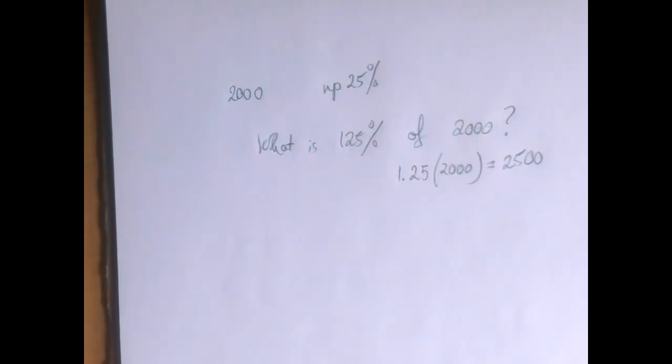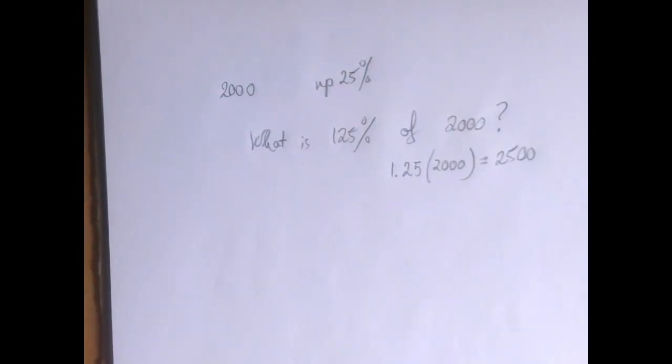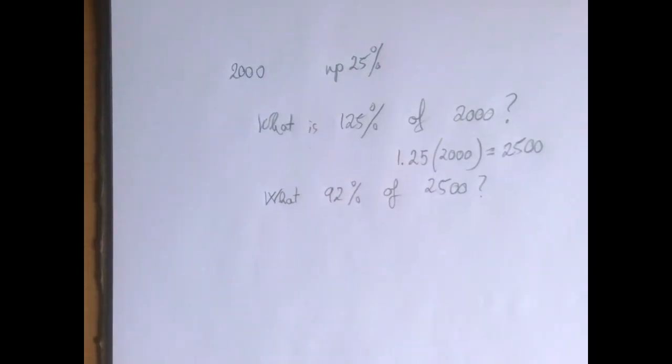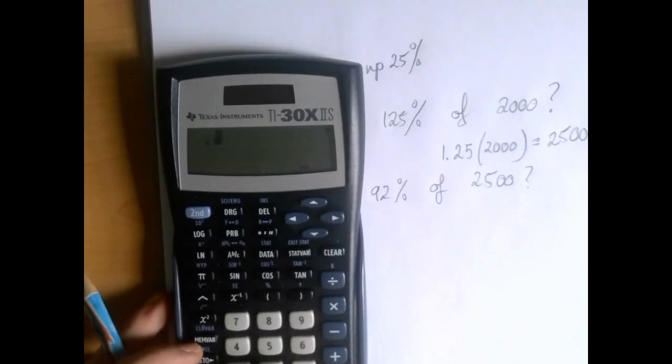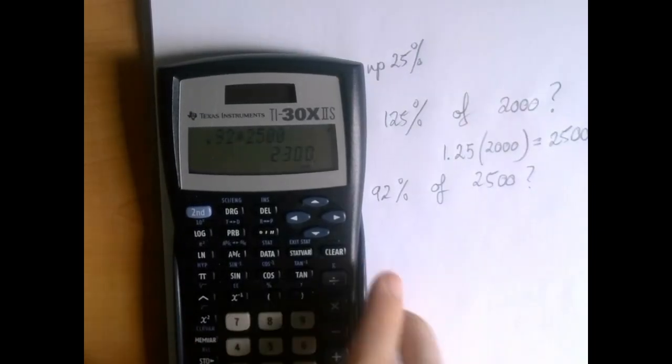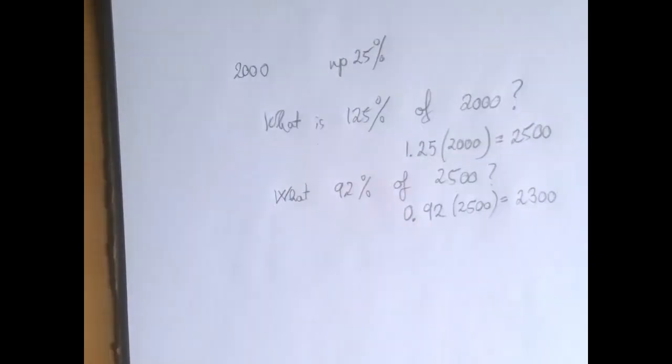And next, again, instead of computing 8% and subtracting that 8%, let's just go, what is 92% of 2,500. So that's 0.92 times 2,500, so we got 2,300 back. Okay. So we're doing the same thing, it's just the methods we're using are a little bit more sophisticated.